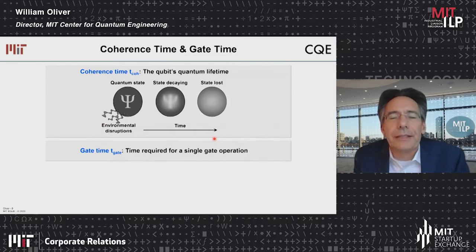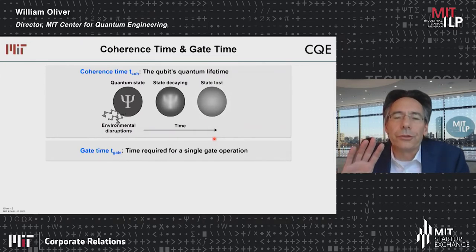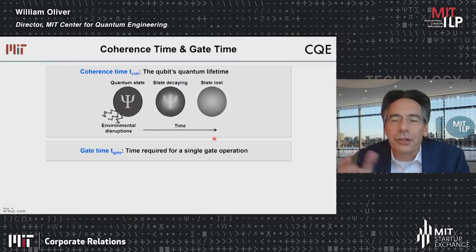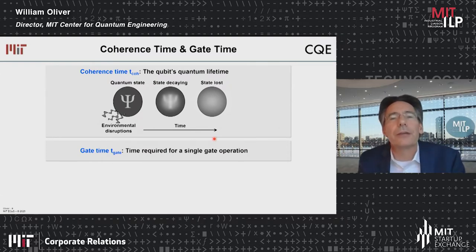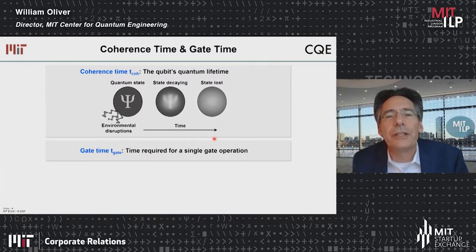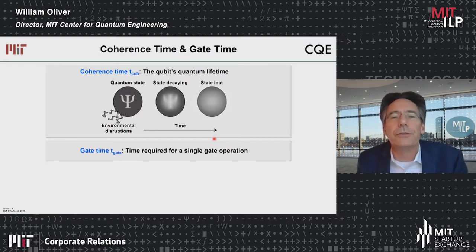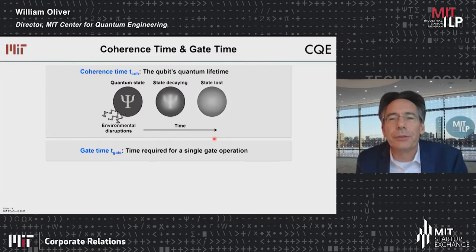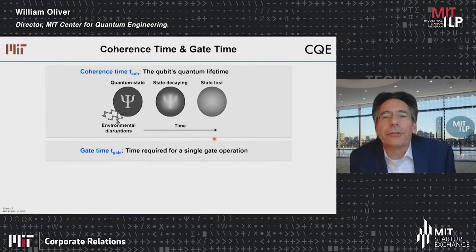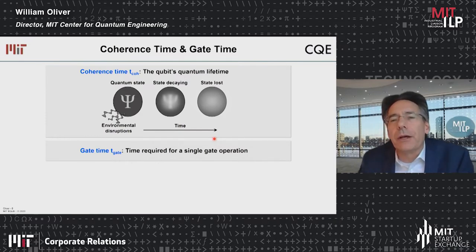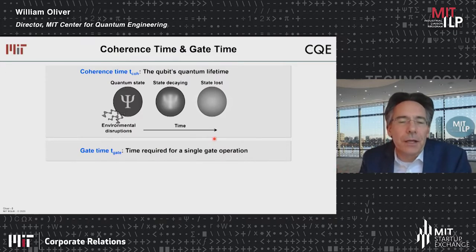The second time scale we care about is the gate time — the time required to perform a logic operation. Quantum computers, just like classical computers, use logic gates to implement quantum logic: single qubit gates and two qubit gates. With single and two qubit gates, a handful of them, one can implement any quantum logic — just like in a classical computer, if you have one-bit and two-bit gates, a few of them, you can implement any Boolean logic.